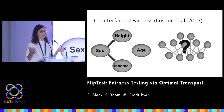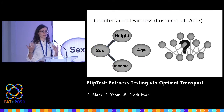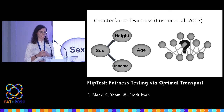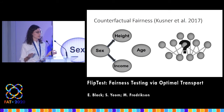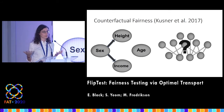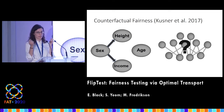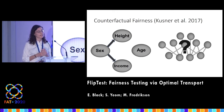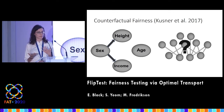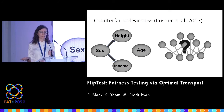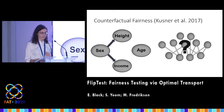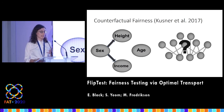Now this is all well and good if we have the perfect causal model — some way of knowing exactly how these features are related. But we can imagine situations where we're not comfortable making all of these causal assumptions to generate this graph. Furthermore, we might be interested in seeing discrimination based not just on causal factors, but on correlated factors.